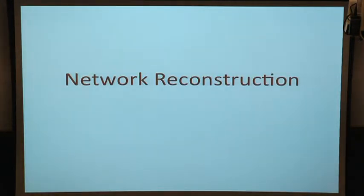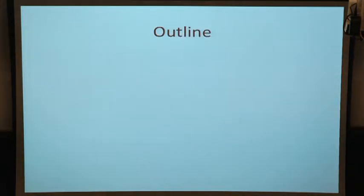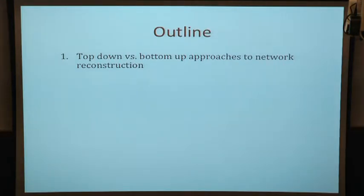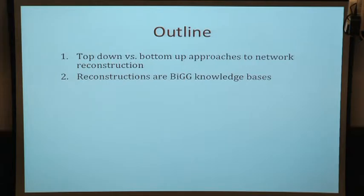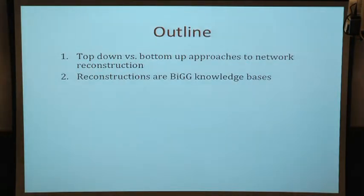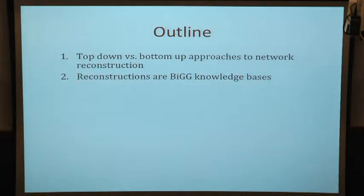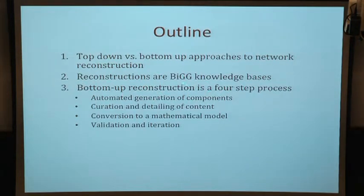Now I want to talk about the first aspect today: the process of reconstructing metabolic networks. There are two major approaches to building networks — top-down and bottom-up. Top-down networks are usually built from large amounts of high-throughput data, integrating those together and making inferences. Bottom-up refers to taking lots of small-scale experiments and integrating them into a network. Reconstructions are biochemically, genomically, and genetically structured knowledge bases, and you can use them to piece together a huge amount of experimental information, which forces you to reconcile that information.